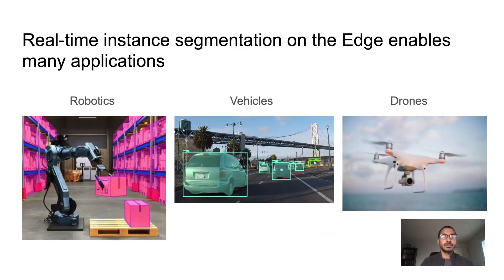Instance segmentation is a challenging problem that requires correct detection and segmentation of each object instance in an image. Having a fast and accurate instance segmenter would have many useful applications in downstream tasks such as robotics, autonomous vehicles, security, and others. However, many of these applications run on edge devices. Therefore, in this work we explore how one may achieve real-time speeds on the edge while maintaining competitive performance.